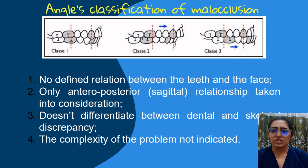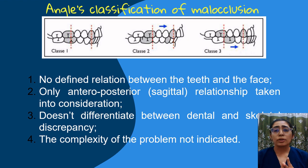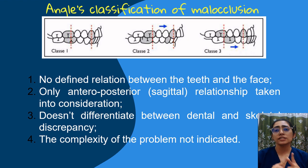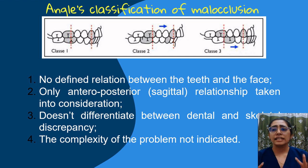This classification has earned some criticism. First, the relationship between the teeth and the face is not described. Second, only the anterior-posterior or sagittal deviation is taken into consideration, because dentition can be affected in all three planes of space: transverse, vertical, and sagittal. Third, the description of the dental relationship does not include a diagnosis, as there is no differentiation between dental or skeletal discrepancy — two patients with the same dental relation may have different skeletal proportions and therefore require different treatment planning.